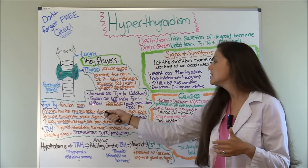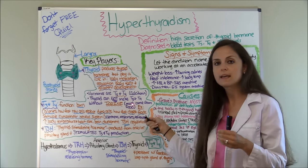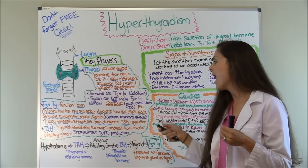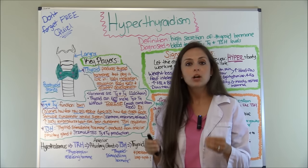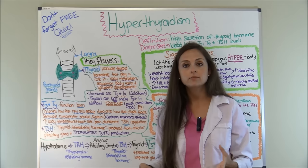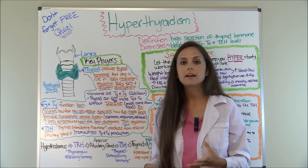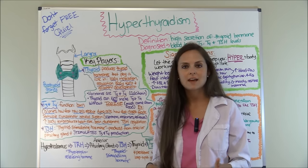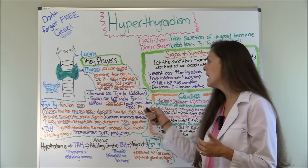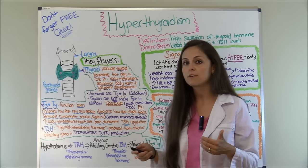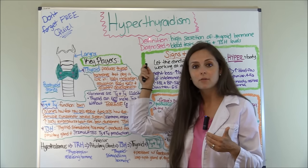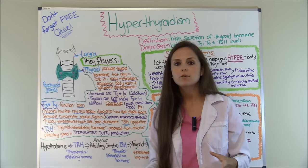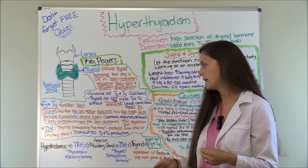An important point to remember: the thyroid cannot make thyroid hormones T3 and T4 without iodine. The person has to consume enough foods with iodine — foods high in iodine include seafoods like seaweed, eggs, dairy, and things like that. If they get too much iodine, they can go into hyperthyroidism. If they don't get enough iodine, they will get hypothyroidism.